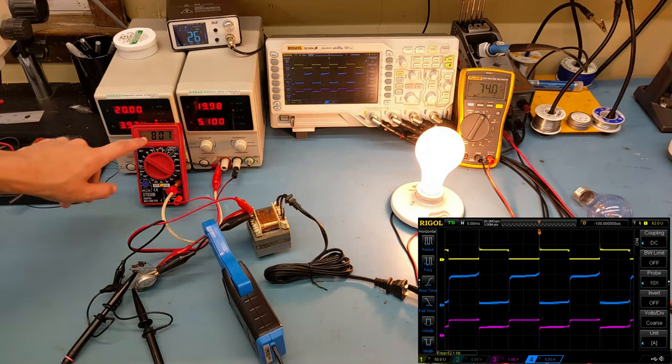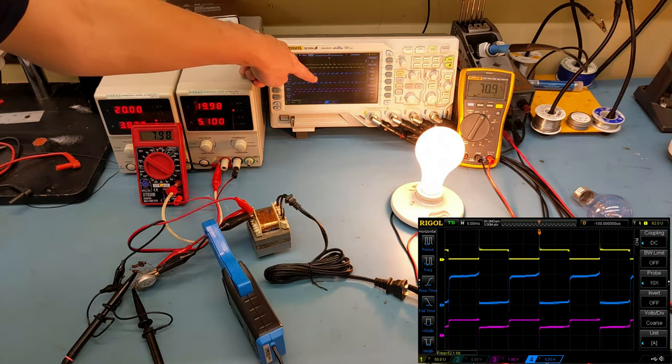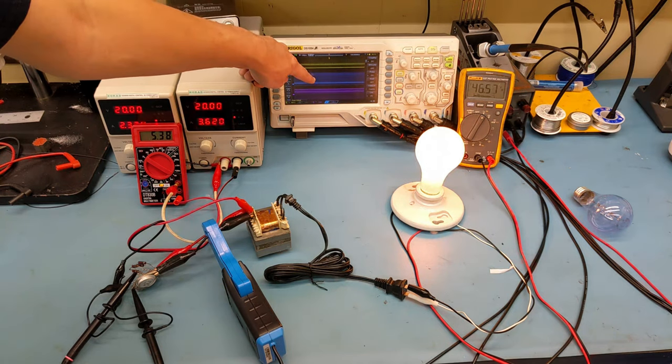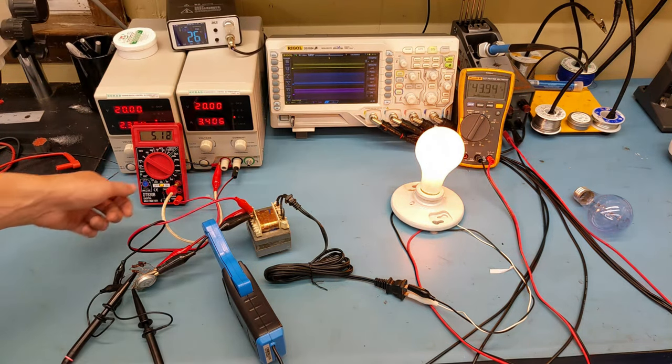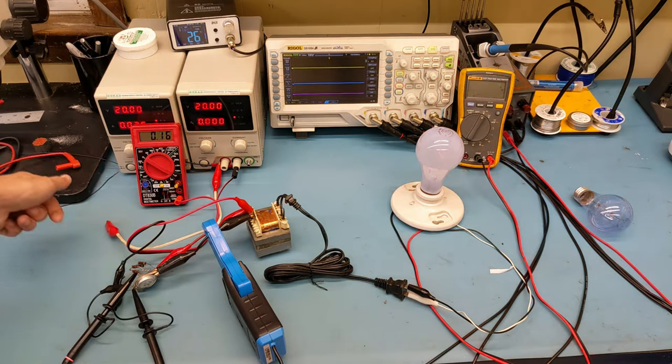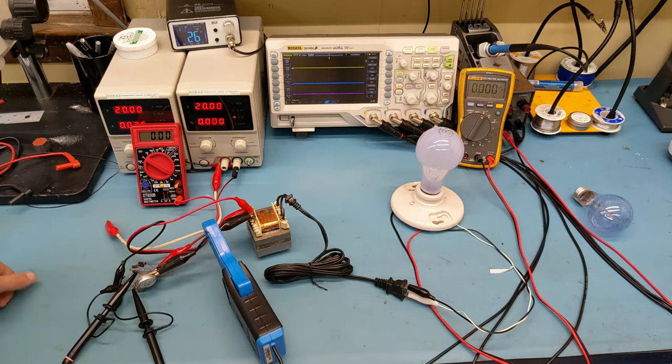You can see this is a much heavier load and we're drawing much more current on our primary. Our primary current is eight amps and it's going out, and now it's drawing less current but everything is getting really really hot so let's turn that off.